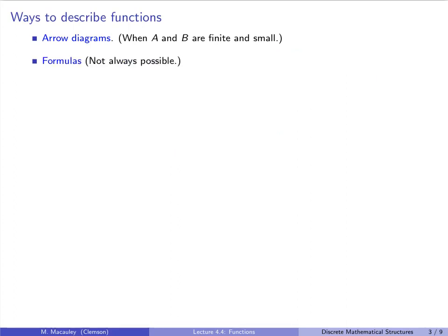The next way to describe a function is with a formula. This is not always possible, but many functions we encounter — especially in algebra and calculus — have simple formulas. For example, consider F: ℝ → ℝ where F(x) = x². Here the codomain is ℝ but the range is the non-negative real numbers.